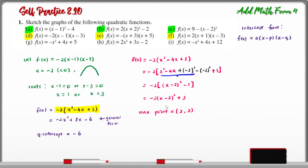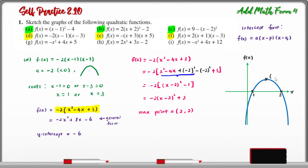With all this information, we can now sketch the graph for question D. The roots are at x = 1 and x = 3. The maximum point has coordinates (2, 2). The axis of symmetry is the vertical line x = 2, and the y-intercept is -6.